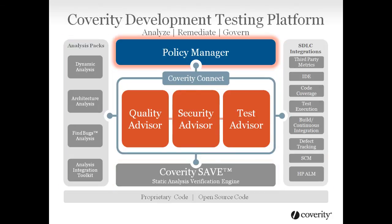Coverity Policy Manager helps you define a consistent standard for code quality, security, and testing across your organization and supply chain, and monitor your projects, teams, and suppliers against it by selecting or defining development metrics and thresholds that are aligned to your objectives, with flexibility to modify these as your objectives shift throughout the course of your project. The platform becomes your development operations center, monitoring and pinpointing areas of risk, gaining visibility, traceability, and predictability for better decisions.